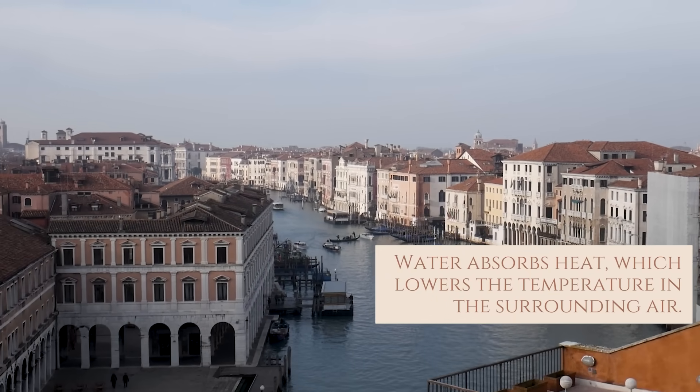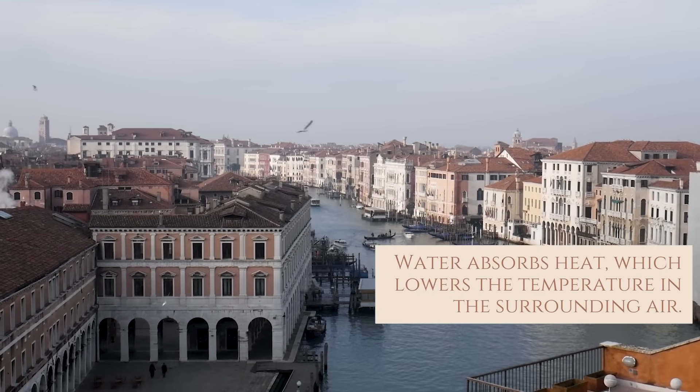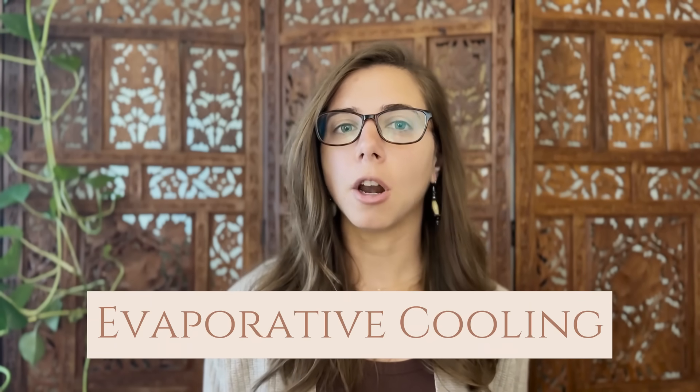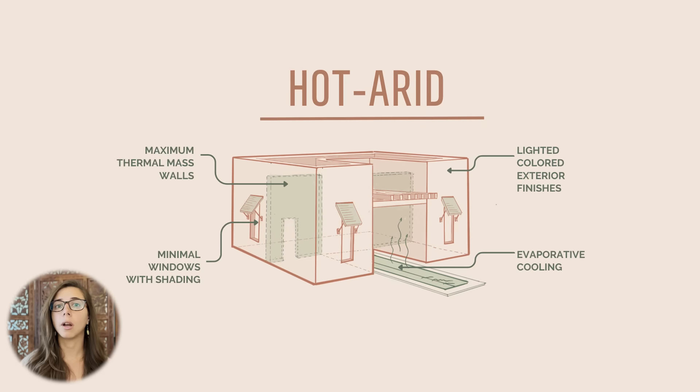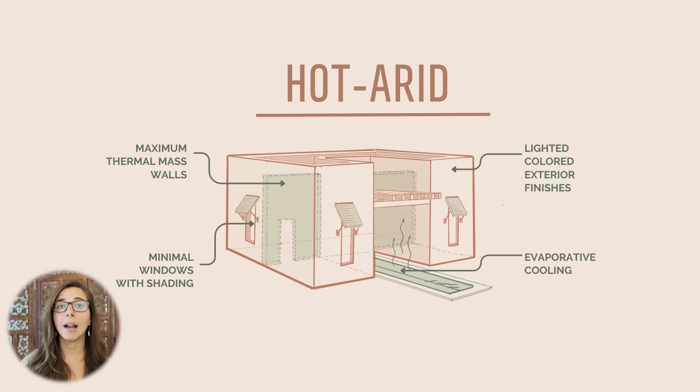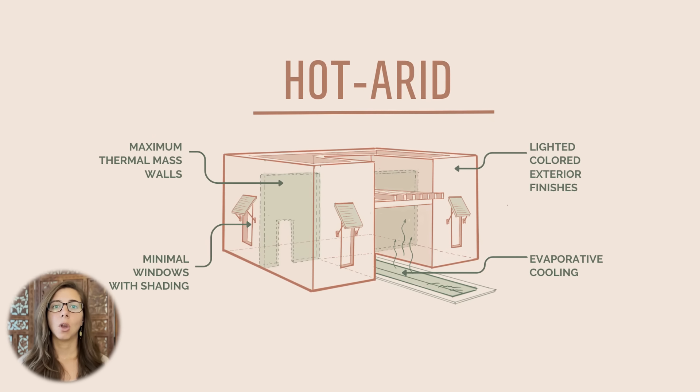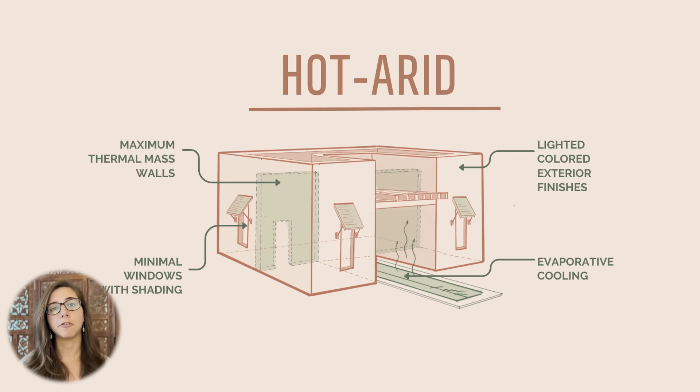Passive cooling tip number two is working with water. Water absorbs heat, which lowers the temperature in the surrounding air, so we can use water in our designs to naturally reduce the heat. And these are sustainable ways to use water, even if you live in a hot and dry climate. First, there's evaporative cooling: if we put water features like pools and fountains near windows or in courtyards, they can help cool the air as it enters the building.